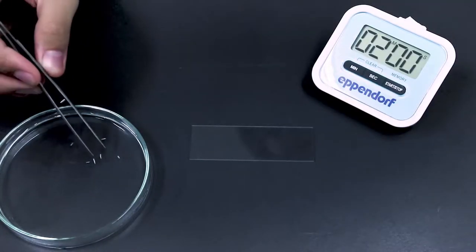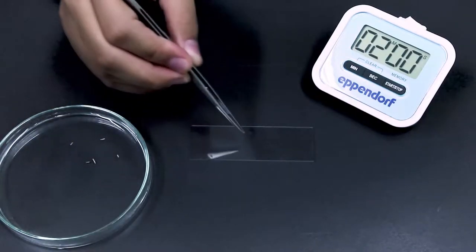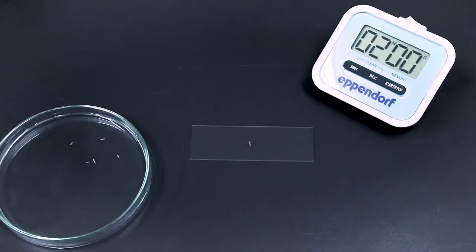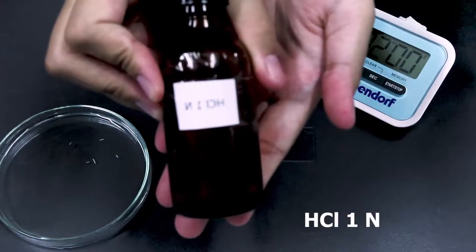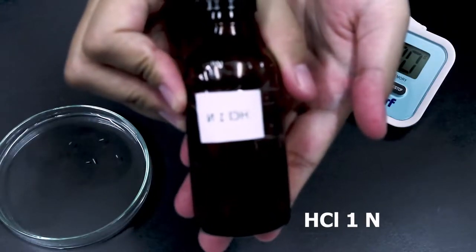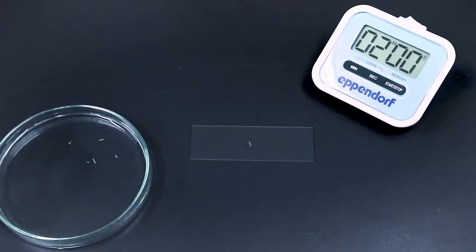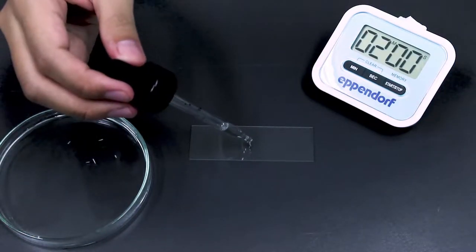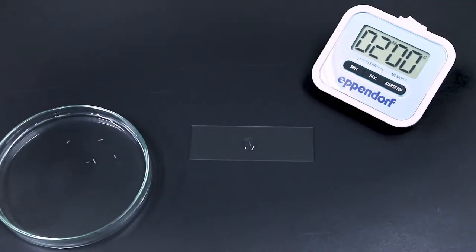We have this slide here, so you just pick one of the root tips. It's a bit difficult to pick up. Set the timer for two minutes. We're going to use the hydrochloric acid or HCl, so you can just drop one or two drops of the HCl onto the root tips on your slide and leave it for two minutes.